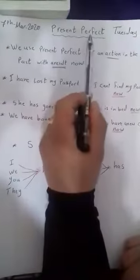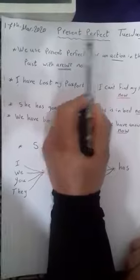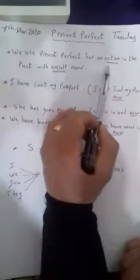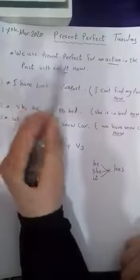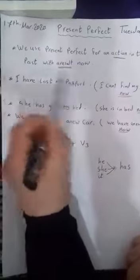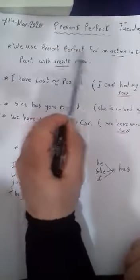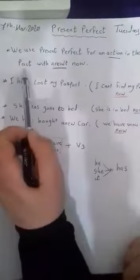Today we'll talk about Present Perfect. At first, we use the Present Perfect for an action in the past. This action happened in the past with the result now. Again, we use Present Perfect for an action in the past, in the past with a result now.